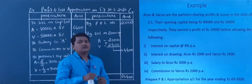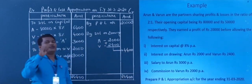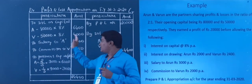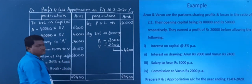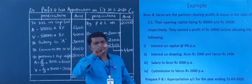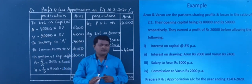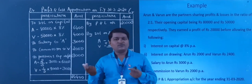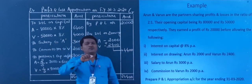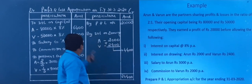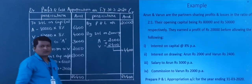If you have any inquiries, you can do a working note. In the working note, A stands for Arun and V stands for Varun. This is where you can show the interest on capital calculation. No problem — you can do it as extra working notes.